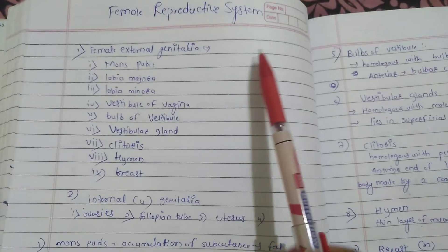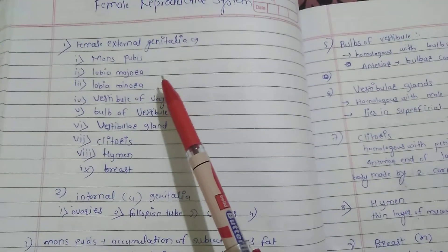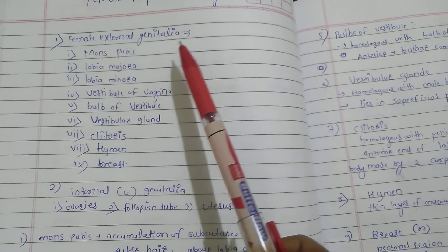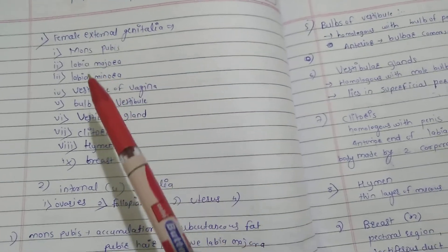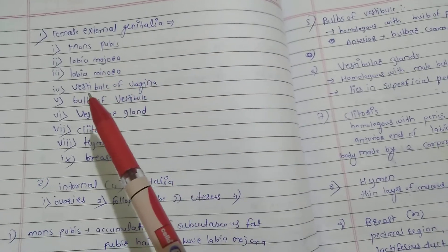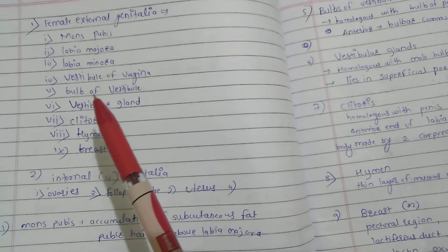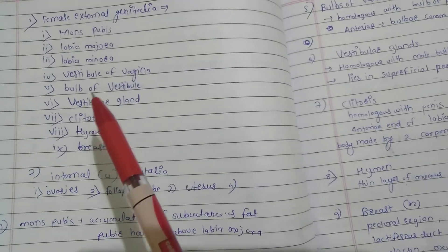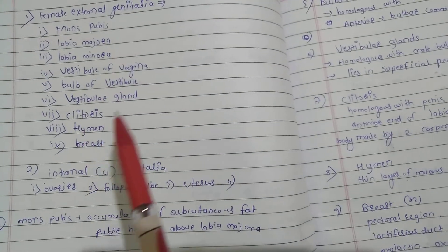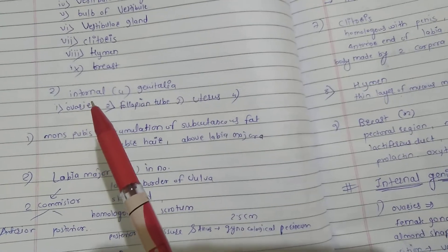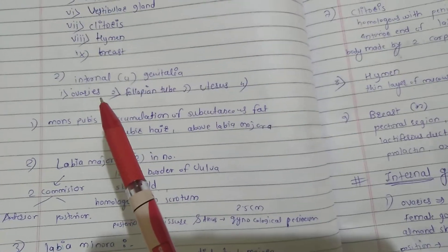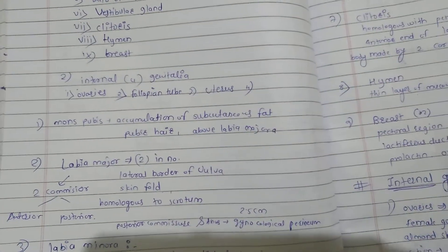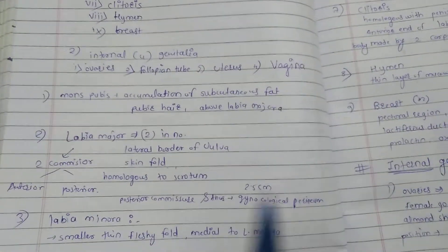The female reproductive system. The female external genitalia includes nine structures: mons pubis, labia majora, labia minora, vestibule of the vagina, bulb of the vestibule, vestibular gland, clitoris, hymen, and the breast. The internal genitalia includes four structures: ovaries, fallopian tube, uterus, and vagina.